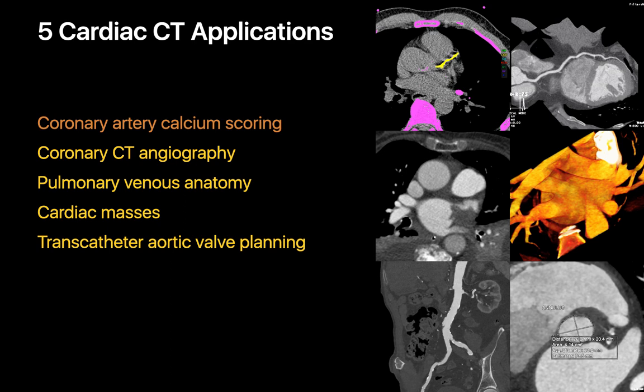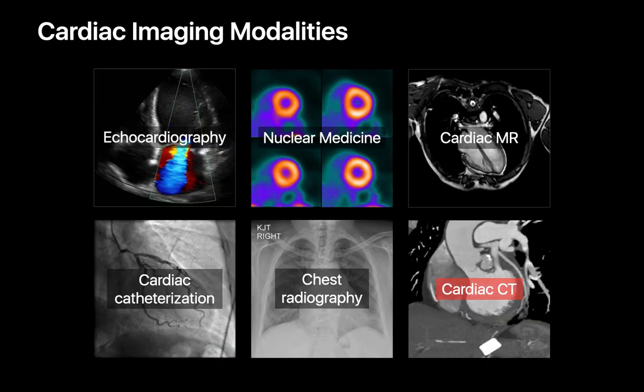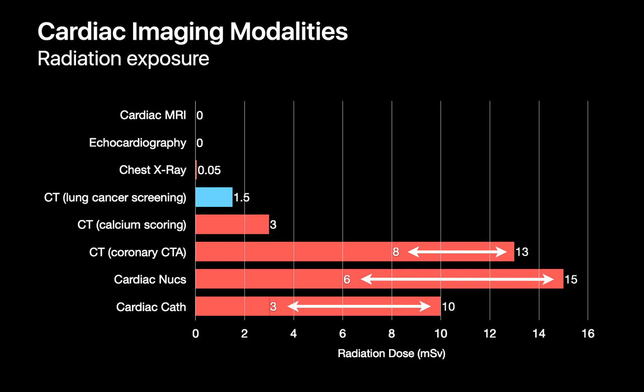That completes our review of the five major applications of cardiac CT, which is one of the six modalities we commonly use to image the heart. One last useful slide shows the radiation dose patients might get from each kind of cardiac imaging study, using low-dose lung cancer screening chest CT as a reference. Coronary CTAs and cardiac nuclear studies can result in approximately seven times more radiation dose than a lung cancer LDCT, while the radiation dose of a chest radiograph is barely visible at this scale.